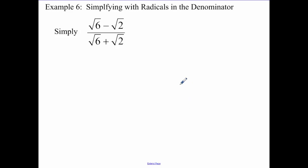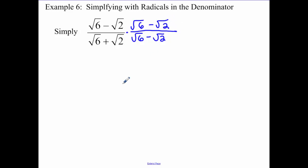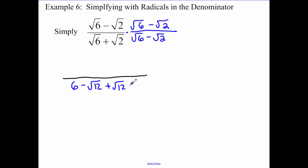Example six: simplifying radicals in the denominator. What you have to do is multiply by the conjugate of the bottom — very similar to what we did with imaginary numbers. You have to multiply by the same thing on top that you do on the bottom. When I multiply out the bottom, the first terms are six, the outer terms are minus root twelve, the inner terms are plus root twelve, and the last term is minus two. Make sure you're not making that minus four.